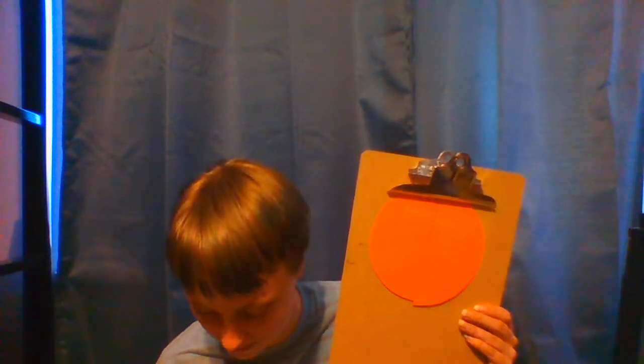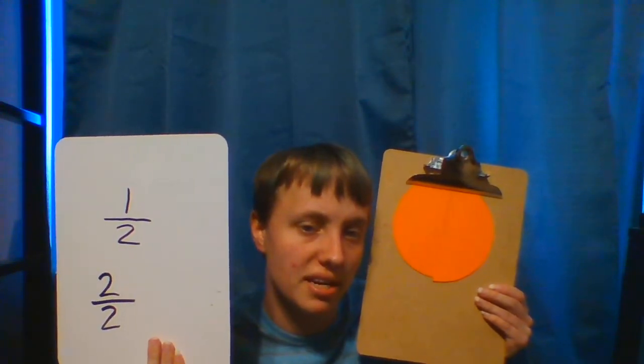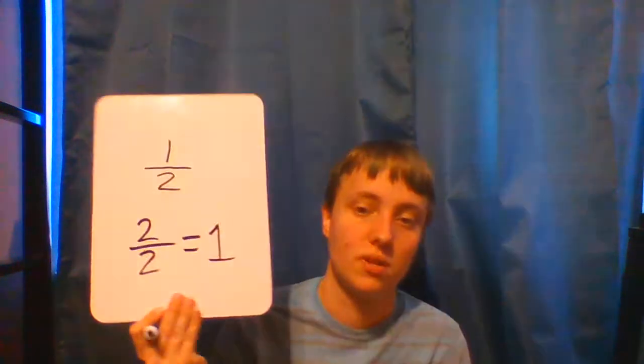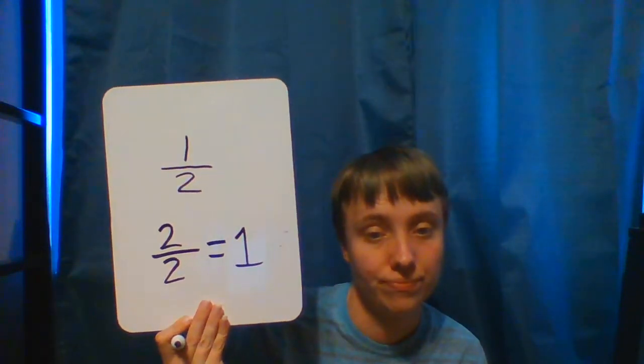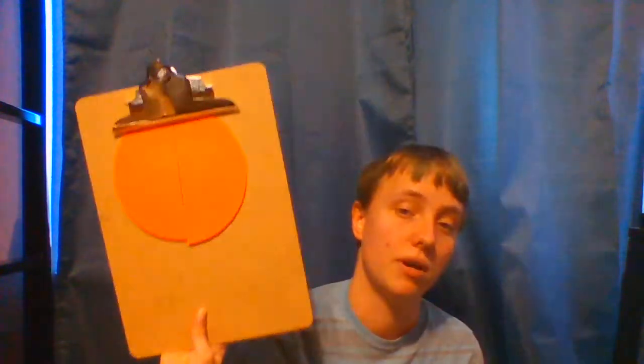Now if I put them together, I could say that I have two out of two parts. But two out of two parts equals one, because it equals my one whole. So two out of two just equals one, because that is one whole that those two parts make up. Half and a half makes a whole.